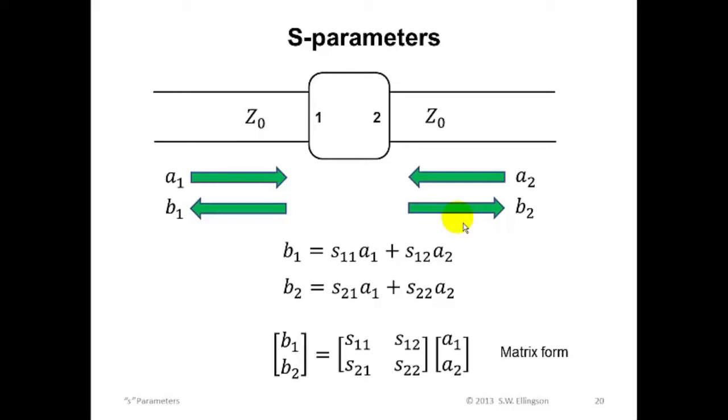Now think back to how we define the Z, Y, and H parameters. In each of those schemes, everything hinges on the observation that the total voltage and the total current at each port, that is V1, V2, I1, I2, are all linearly related, can be described as linear combinations of each other. By linearly related, we mean that any one of these voltages or currents can be defined as this linear combination of the remaining voltages and currents.